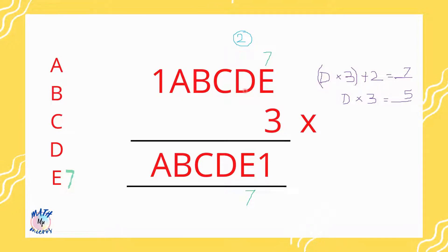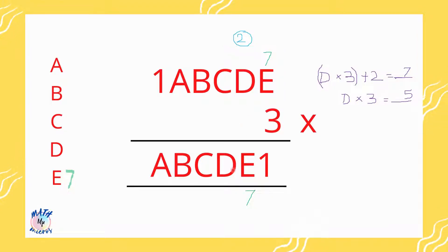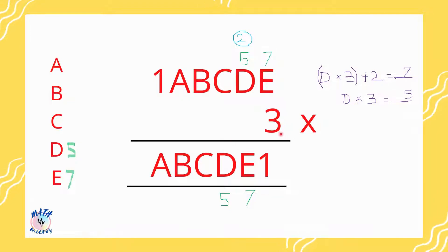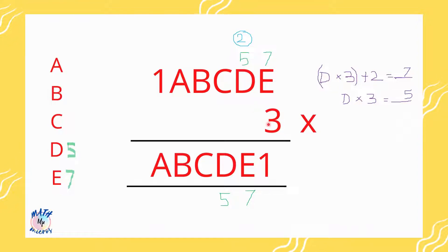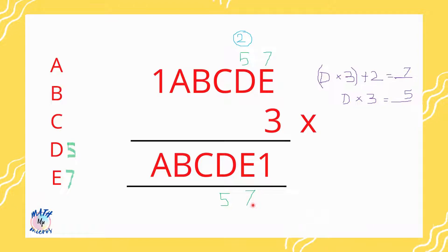So I assume d to be 5. Since there is also a d in the result, that is substituted as 5 as well. Continuing the multiplication: 5 times 3 is 15, add the carried-over 2 to get 17. So 7 is placed here — which matches exactly — and 1 is carried over.